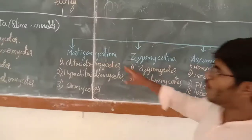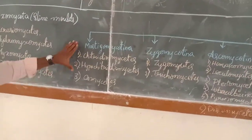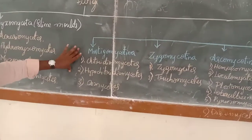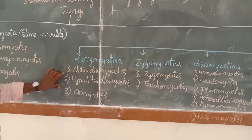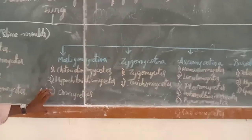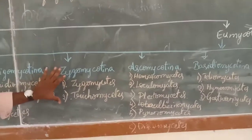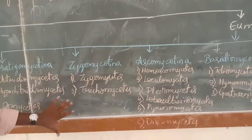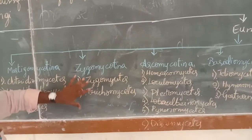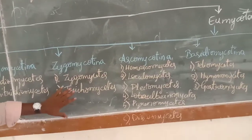Mastigomycotina is further divided into three subclasses: Chytridiomycetes, Hypochytridiomycetes, and Oomycetes. The second subdivision, Zygomycotina, is classified into two subclasses: Zygomycetes and Trichomycetes.